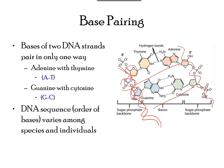The base pairing forming the steps is always between a purine and a pyrimidine. A pairs with T, and C pairs with G. This is the basis of Chargaff's rule, also called complementary base pairing. Adenine and thymine are connected by two hydrogen bonds, while guanine and cytosine are connected by three hydrogen bonds.